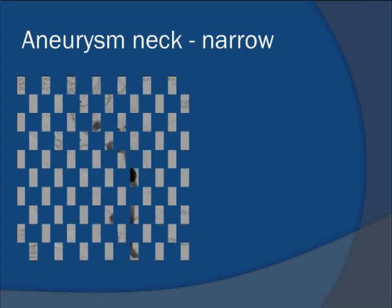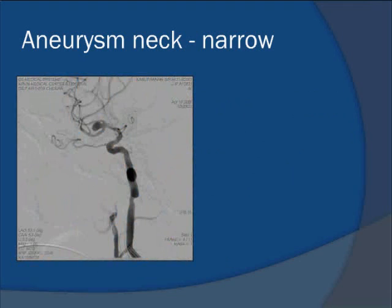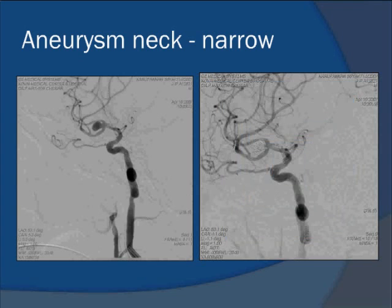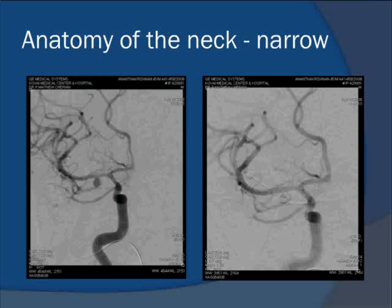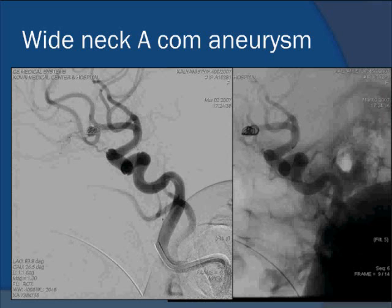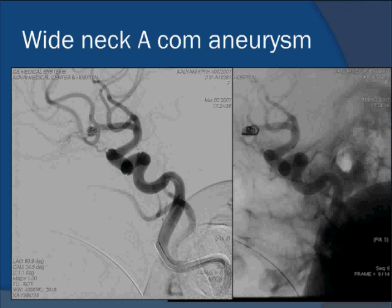Look at this picture — an anterior communicating artery aneurysm with a narrow neck, which is easy to treat. The aneurysm is coiled by placing a micro catheter across it. This is a narrow neck aneurysm in the middle cerebral artery treated by the same technique. But look at this next picture — an anterior communicating artery aneurysm where we tried to coil it and you can see how easily the coils prolapse out. Obviously, you need something to keep the coils in.